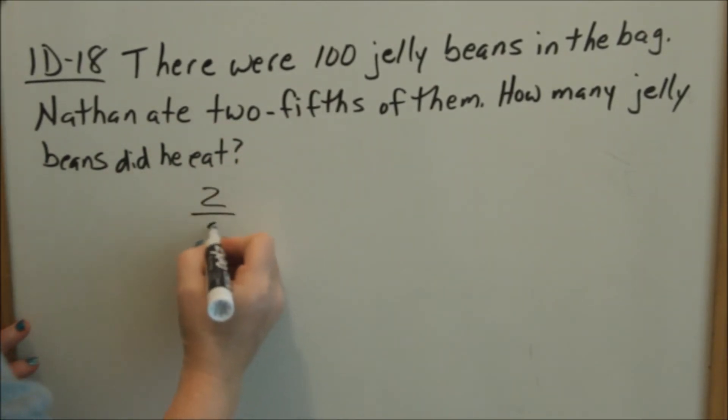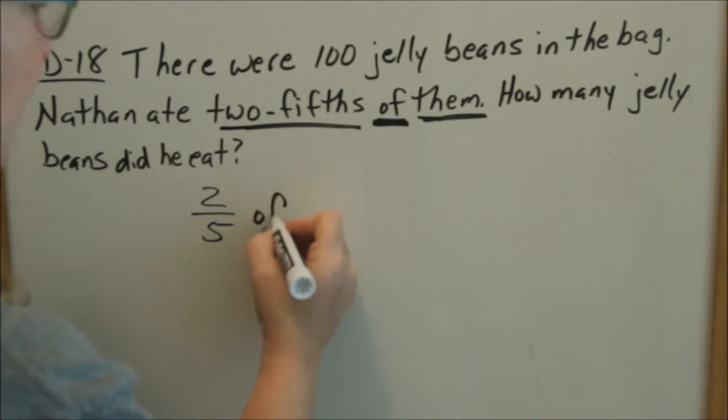Two-fifths, two over five. He ate two-fifths of them. So that keyword of, we turn two-fifths into a number right here and then the word of. Two-fifths of them. What does them represent?